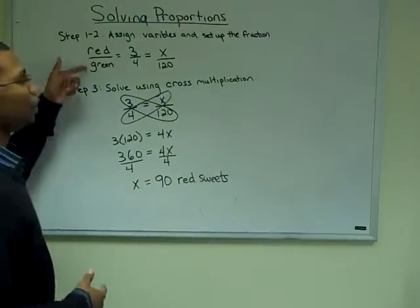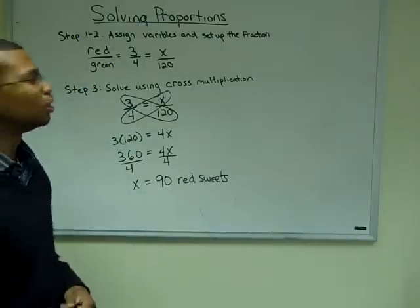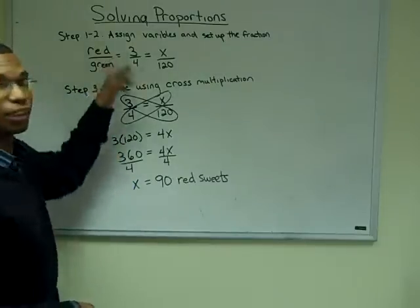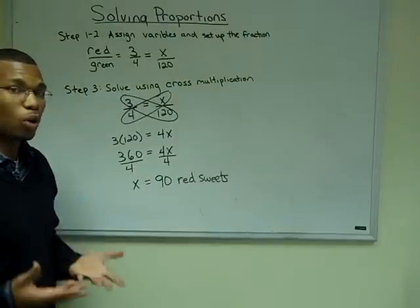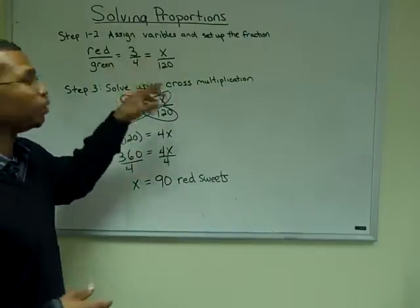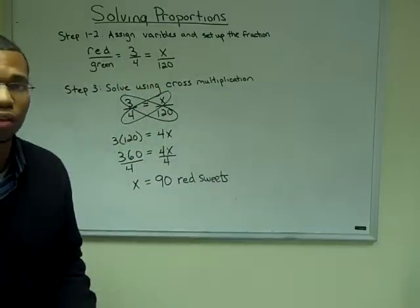The first step, we're going to assign our variables and set up our fractions. So our ratio is set up as from red to green. From red to green, we know that the given proportion is three to four. And the proportion that we want to solve for is the unknown, the red sweets, to 120 green sweets.